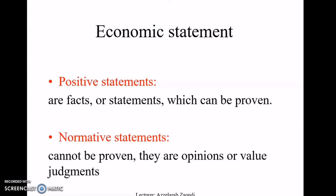Normative statements are those that cannot be proven — they are linked to opinions or value judgments. Predictions, however, are neither positive nor normative statements. For example, 'Morocco will host the World Cup 2026' or 'unemployment will fall under a threshold of five percent next month' — these are predictions, unrelated to provable facts or value judgments.